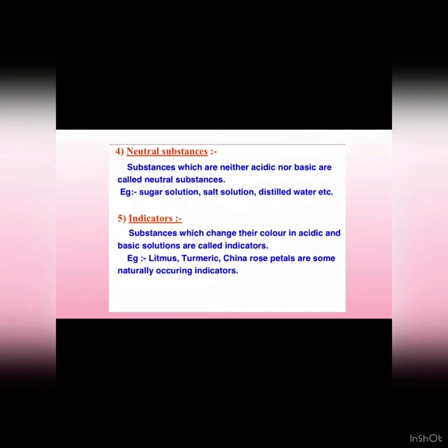Natural indicators are those indicators which we obtain from nature. For example, litmus, turmeric, and China rose petals. These are naturally occurring indicators.